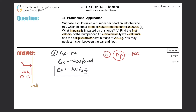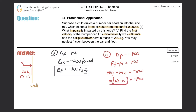Now I can expand this change in momentum to be the final momentum minus the initial momentum, which equals negative 800. And I can expand on these further — remember, momentum equals mass times velocity — so the mass times the final velocity minus the mass times the initial velocity equals negative 800. These two terms have mass in common, so we can factor it out: mass times the quantity (final velocity minus initial velocity) equals negative 800. To find the final velocity, divide out the mass: final velocity minus initial velocity equals negative 800 over m. Then add the initial velocity to the right-hand side, giving us: final velocity equals negative 800 over mass plus initial velocity.